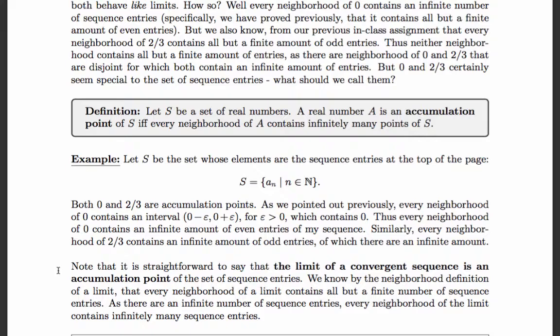Note that it's straightforward to say that the limit of a convergent sequence is always an accumulation point. So any time we have a sequence that converges, and we take those sequence entries and consider them as elements of a set, the limit of that sequence is always an accumulation point. That follows directly from the neighborhood definition of a limit — that every neighborhood of a limit contains all but a finite number of sequence entries.